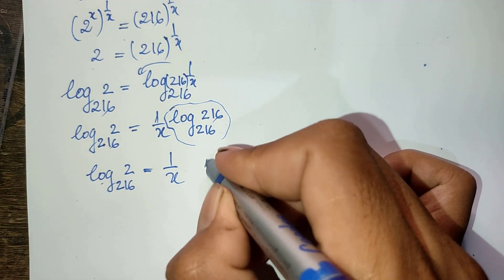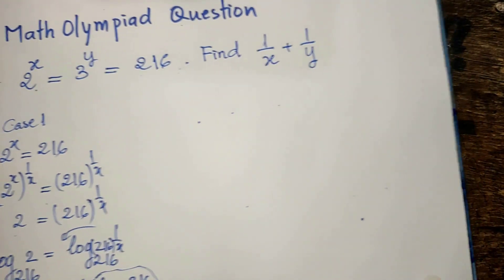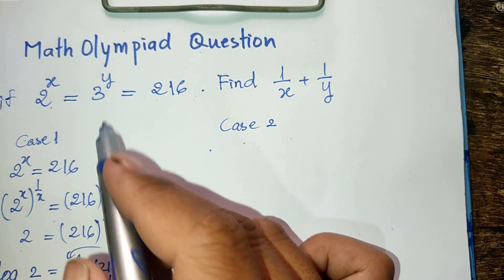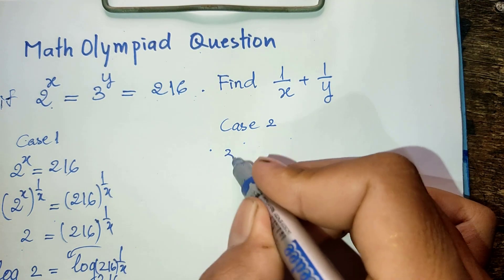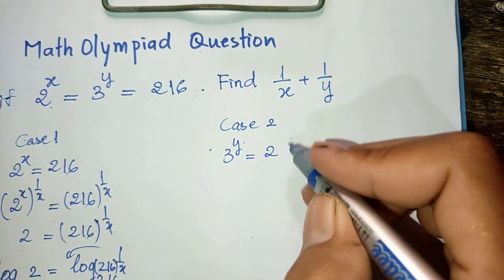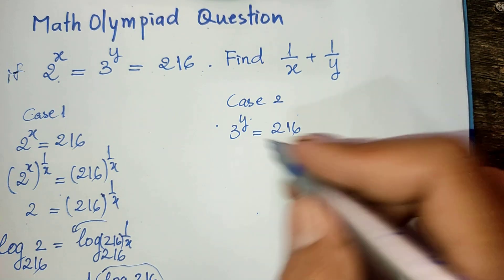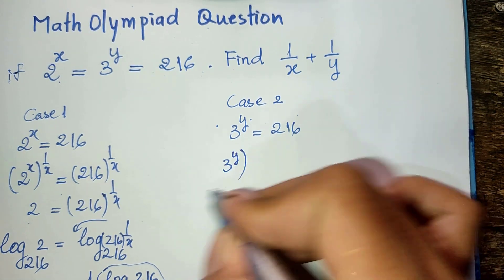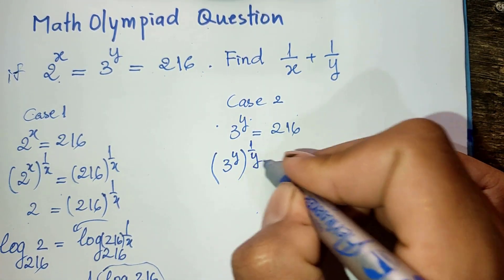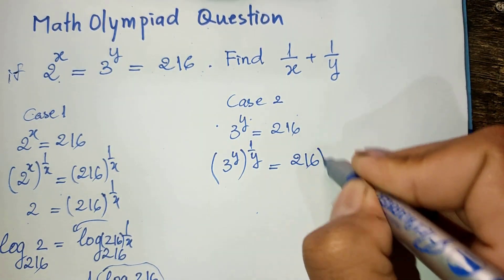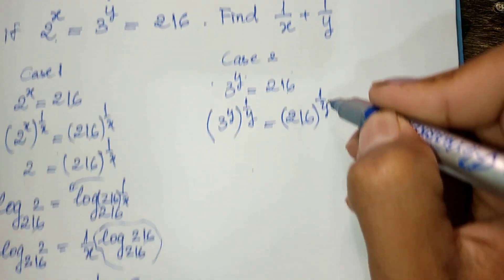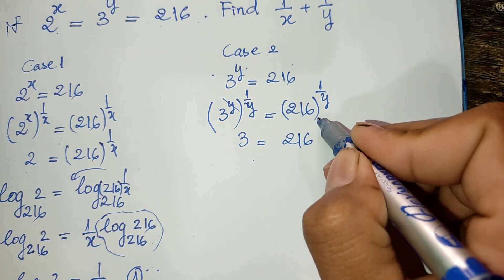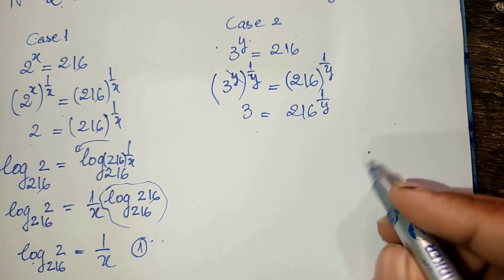Now I take the second equation: 3 power y equals 216. I raise both sides to the power 1 divided by y. So 3 power y, raised to power 1 divided by y, equals 216 raised to power 1 divided by y. Simplifying, I get 3 equals 216 raised to the power 1 divided by y.